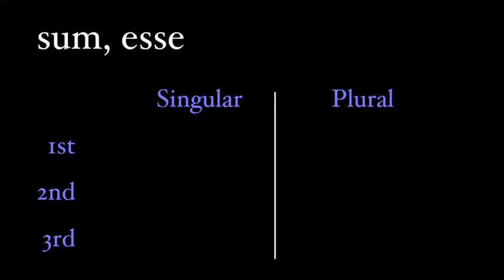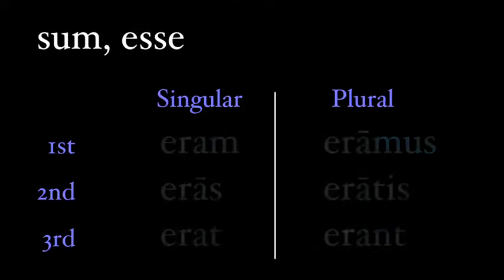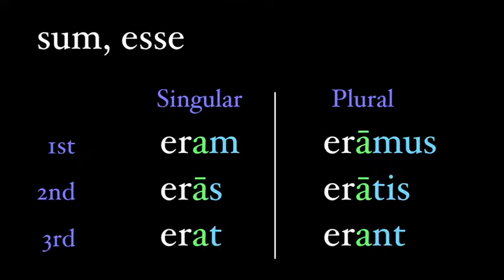There's only one irregular verb in the imperfect tense that you need to know. It's the verb 'sum, esse.' Its imperfect is: eram, eras, erat, eramus, eratis, erant — meaning: I was, you were, he/she/it was, we were, you all were, they were.